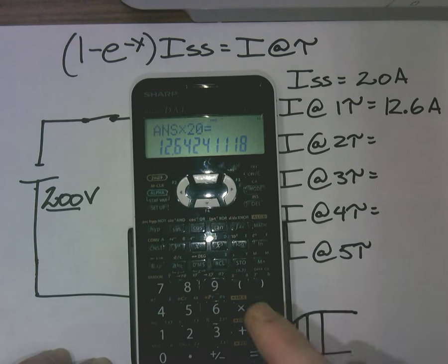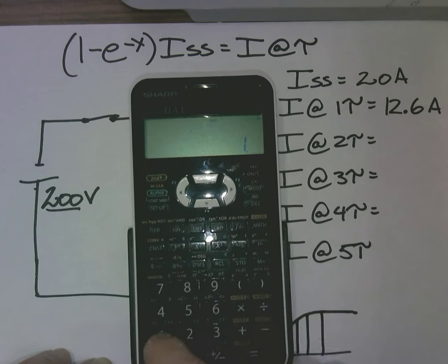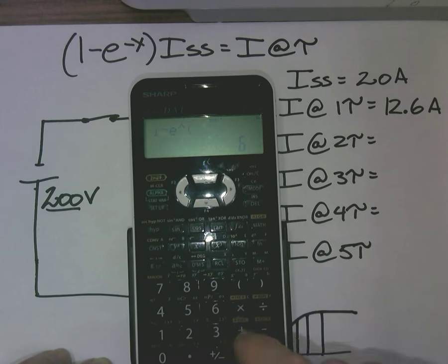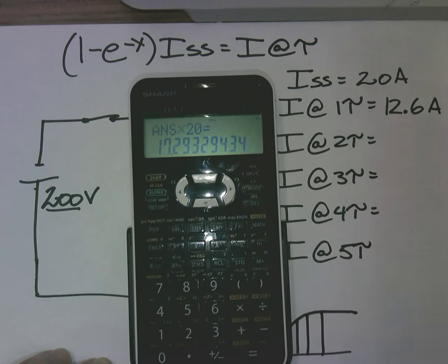Let's do the second tau. Clear that out. 1 minus second function e to the negative 2 equals times 20 amps gives me 17.3 amps.